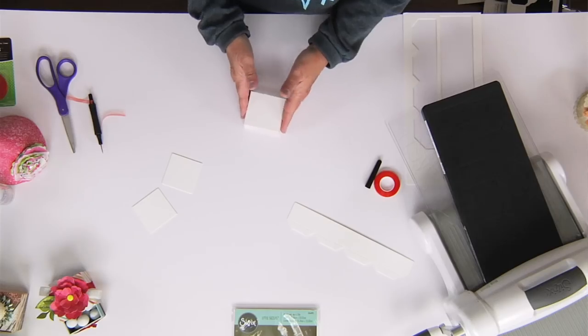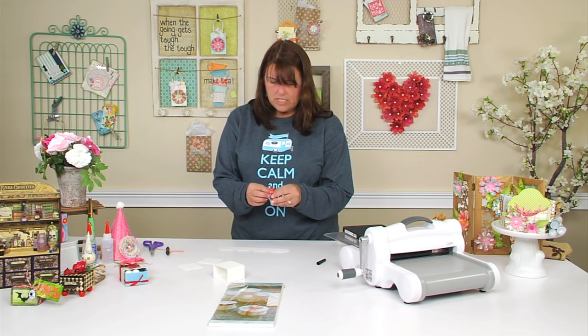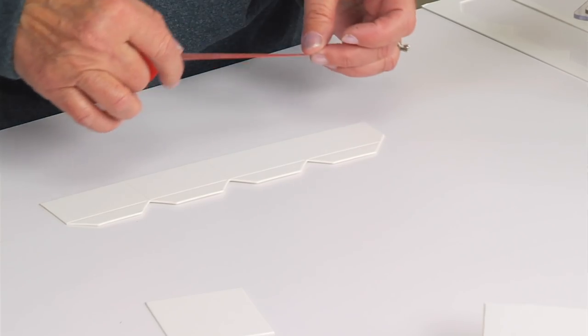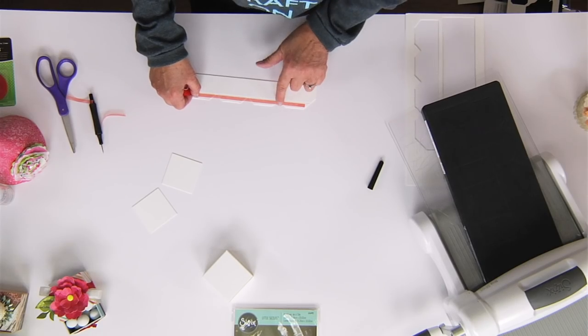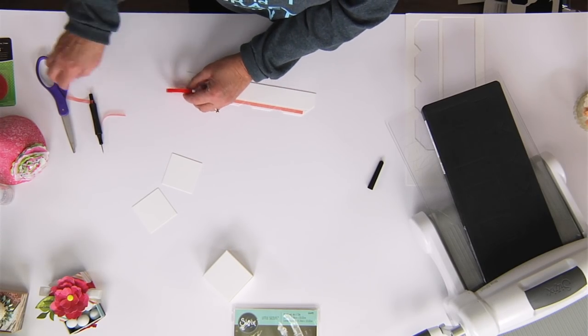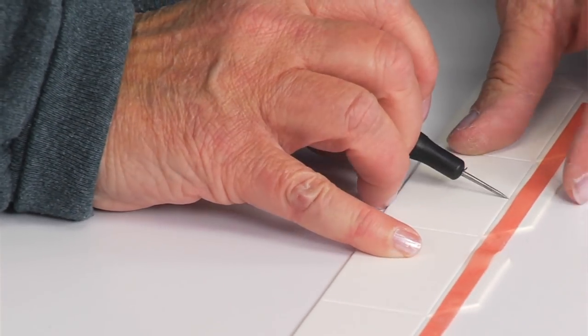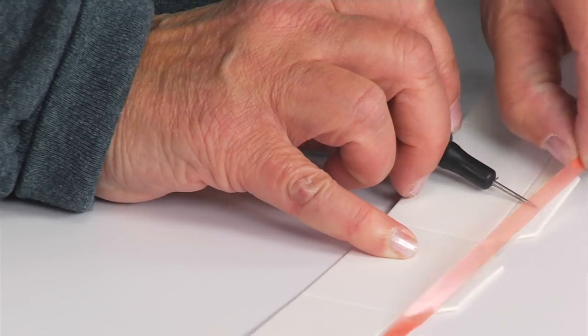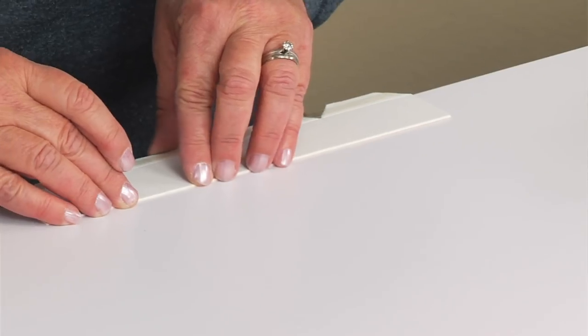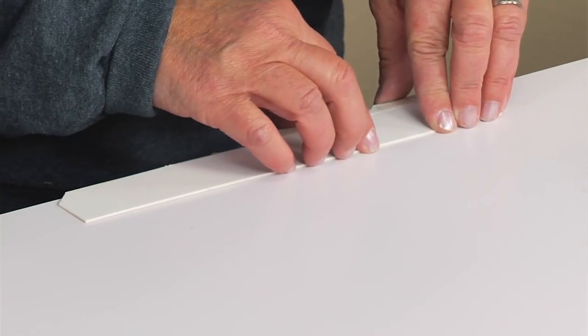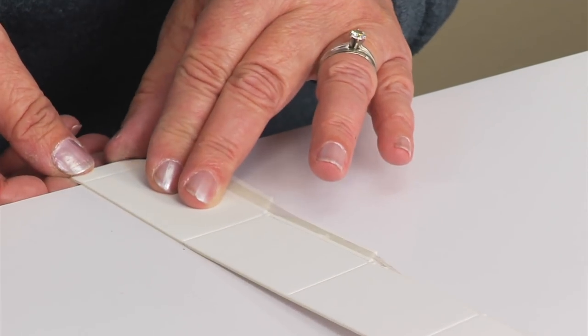Now we'll make the drawer. So we're going to do the same thing, add adhesive to the tabs. And I'm going to keep them all in one strip so that this glue is going to help to adhere the box together and just lift up. And now I'm going to take this and fold down my tabs, going on the edge of the table to make sure I get a nice straight fold.